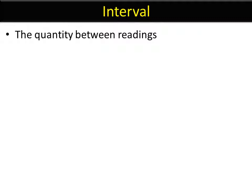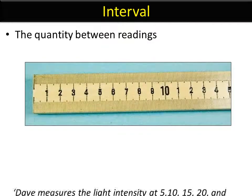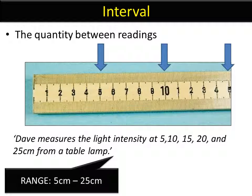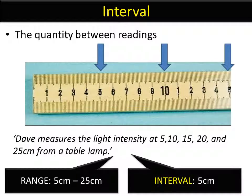The interval is the quantity between the readings. For example, Dave measures the light intensity at different distances. The interval, the space between the readings, would be 5 centimeters. The range would be the smallest to the largest once more, so 5 to 25 centimeters.